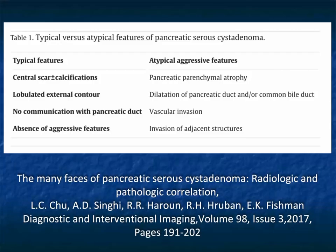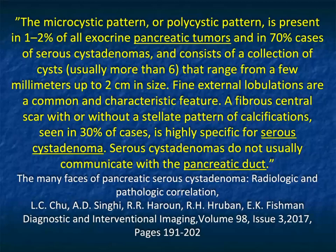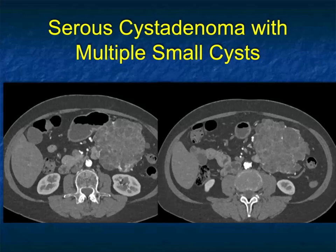Typical and atypical features include: that central scar and calcification are classic but we don't see them all that often; we can see atrophy; duct communication is possible; lesions can look aggressive and vascular, almost simulating neovascularity, though you're typically simply seeing vessels being draped over the lesion, particularly the GDA. The microcystic or polycystic pattern is seen commonly. Dilated pancreatic duct is rare, and calcifications occur in 30% of cases. Each article tends to agree on how serous cystadenomas should look while also focusing on the variability.